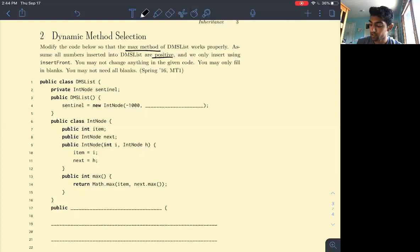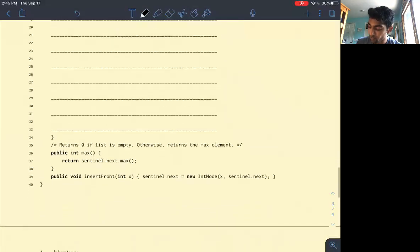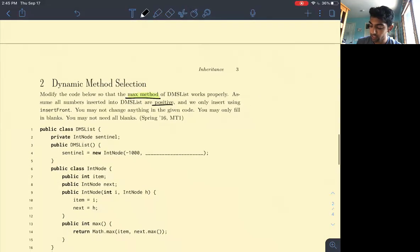Okay, nice. So let's see. We want to make the max method of the DMS list work properly, so we should first figure out what it's doing right now. What this max method is doing is calling sentinel.next.max. Well, what is sentinel? We see here that sentinel is this instance of the int node class, right?